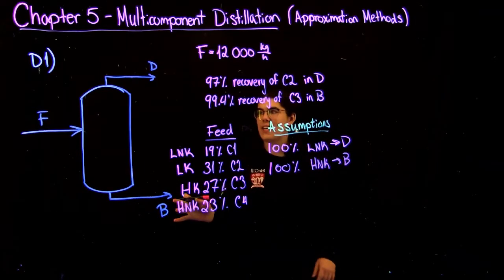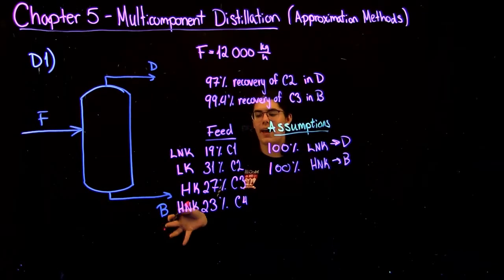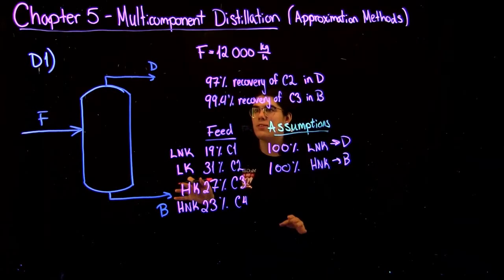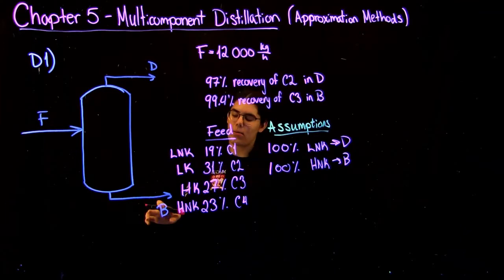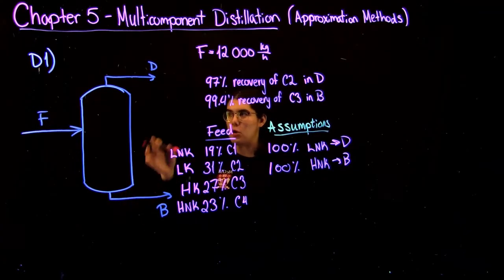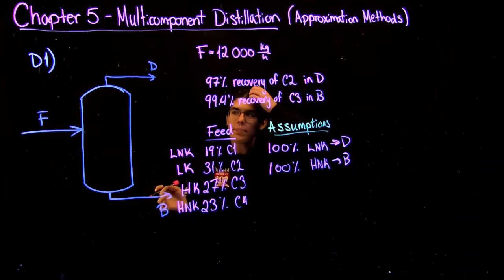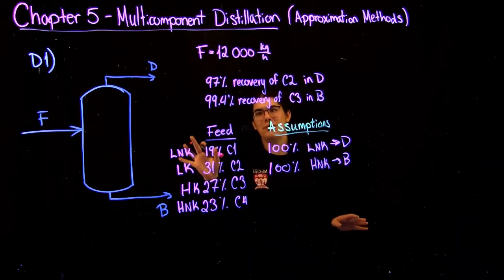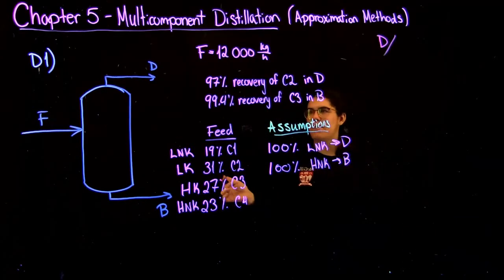The question is just asking us to find the flow rates of the distillate and the bottoms as well as the fractions of each component in each of those streams. So how you start this question is you just choose either the distillate or the bottoms to start from. I'm going to choose the distillate and try to find the flow rate. I'm going to use all the information given and just add it up. So it's a pretty simple mass balance.